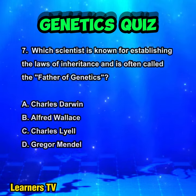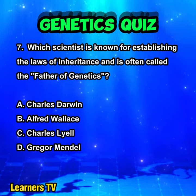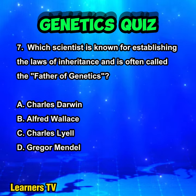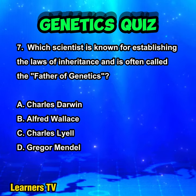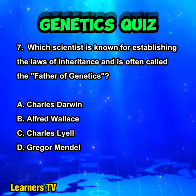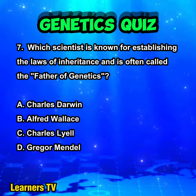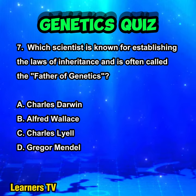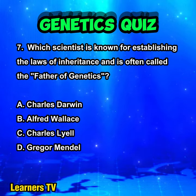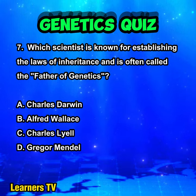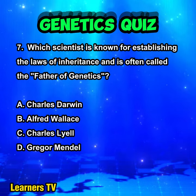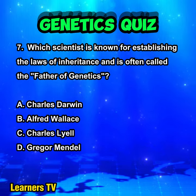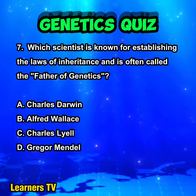Which scientist is known for establishing the laws of inheritance and is often called the father of genetics? A. Charles Darwin. B. Alfred Wallace. C. Charles Lyell. D. Gregor Mendel.